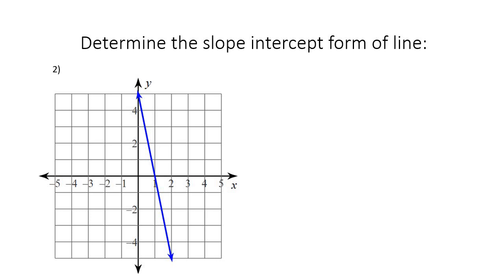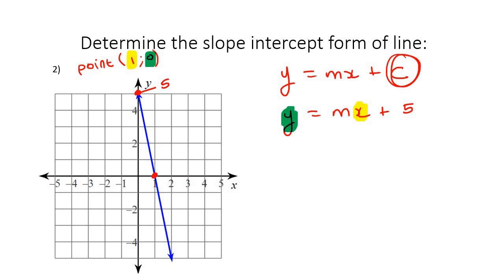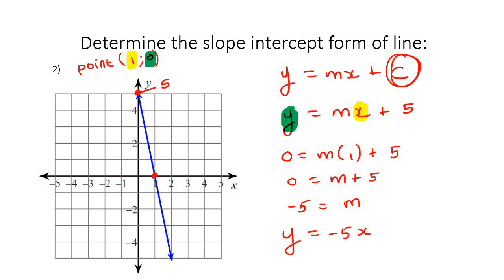Here's another example — determine the slope-intercept form. We can say y equals mx plus c. We can see the y-intercept is going through 5, so immediately we have y equals mx plus 5. To find m, we find another point — for example, the point where x is 1 and y is 0. Plugging that in: 0 equals m times 1 plus 5, so 0 equals m plus 5, meaning m equals negative 5. Therefore, y equals negative 5x plus 5.